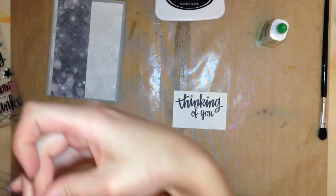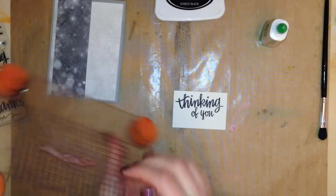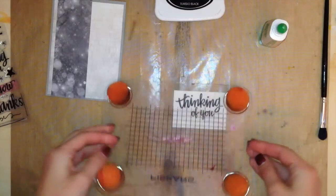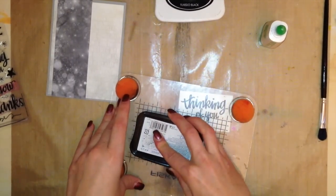Next I'm going to stamp that sort of squiggly line underneath the sentiment. I didn't put them both on the stamp press at the same time because I wanted to get them closer together than the acrylic stamp would allow me to, so I stamped them twice separately.